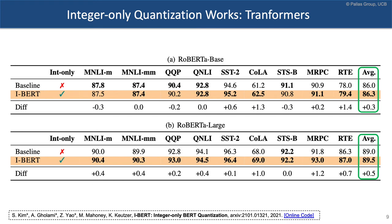We think this is because quantization provides less opportunity for overfitting, which is why we're getting really good results for the smaller tasks in GLUE.